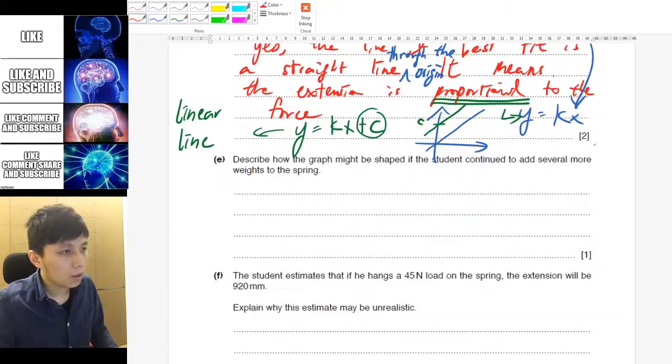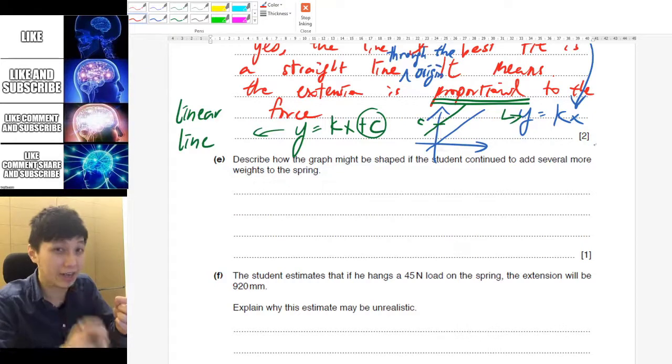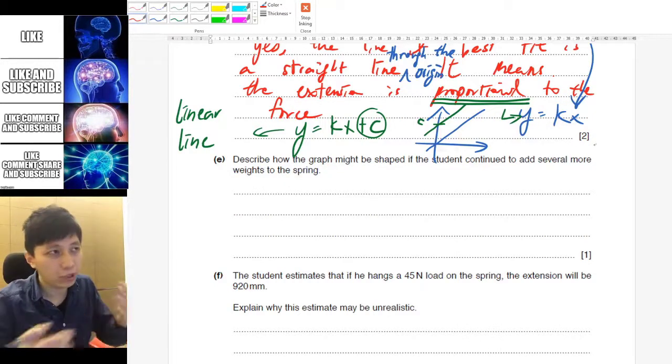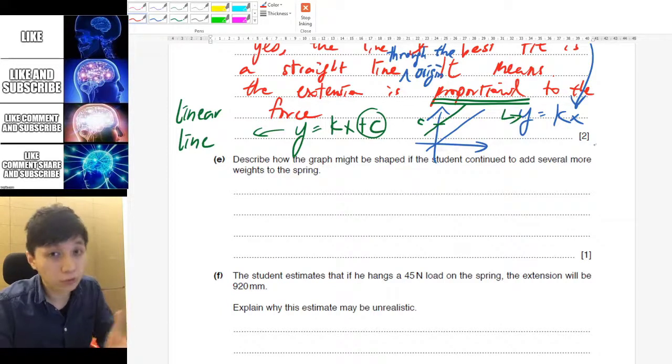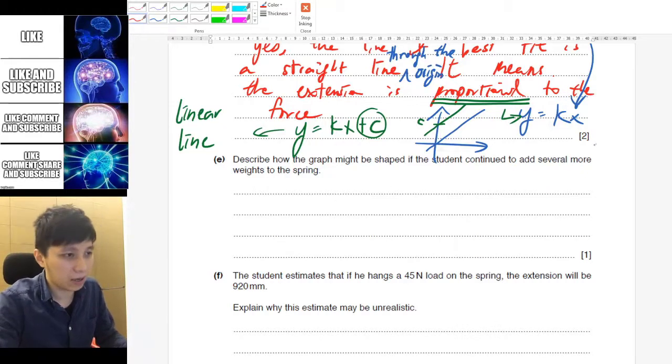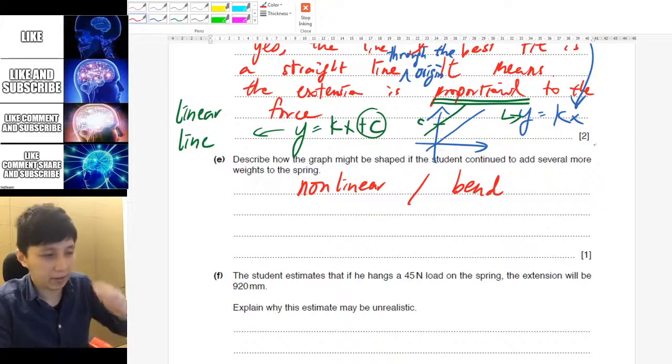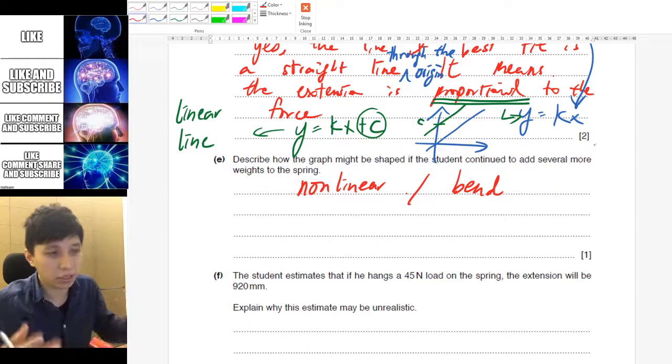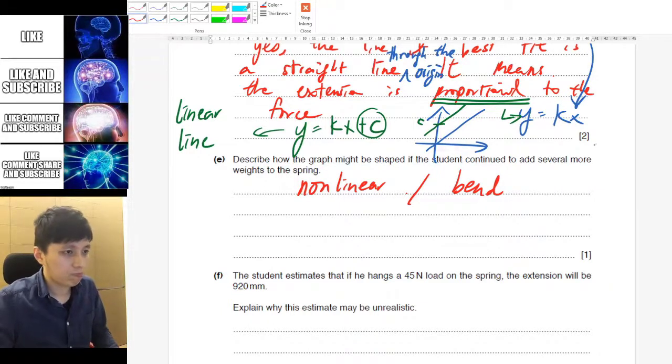Part E. Describe how the graph may be shaped if the student continues to add more. So, like I said earlier, it cannot be infinitely adding and infinitely being a straight line. So, eventually, it will reach a point that is called the proportional limit or even elastic limit. So, what you can say about the graph is it will become nonlinear. Or you can say it will bend. So, that will be the keywords you are looking for. Of course, you have to phrase this whole thing in a sentence instead of just putting down the keywords.